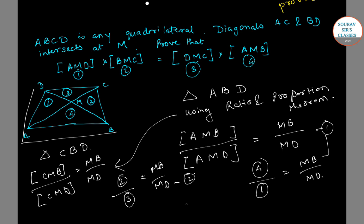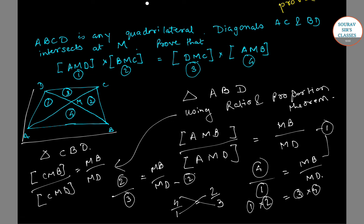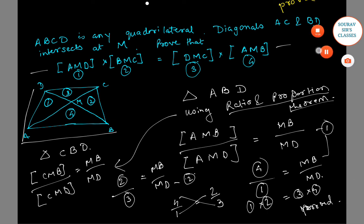From equations one and two, we can write 4 divided by 1 equals 2 divided by 3. Cross multiplying gives us 1 times 2 equals 3 times 4. Replacing back the original areas: area of triangle AMD times area of triangle BMC equals area of triangle DMC times area of triangle AMB, which is exactly what we had to prove. We have proved this using the Ratio and Proportion Theorem. This is it for this video and we will continue with other theorems in the next video. Thank you.